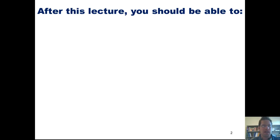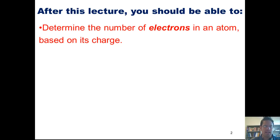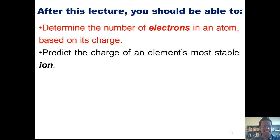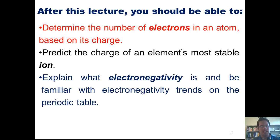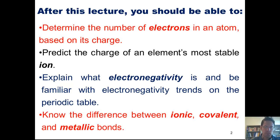With that thought in mind, by the end of this lecture, you guys should be able to determine the number of electrons in an atom based on its charge, predict the charge of an element's most stable ion, explain what electronegativity is, and be familiar with electronegativity trends on the periodic table, and know the difference between ionic, covalent, and metallic bonds.